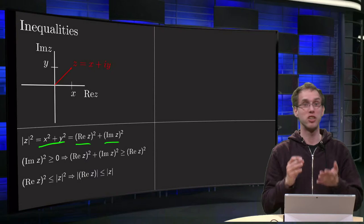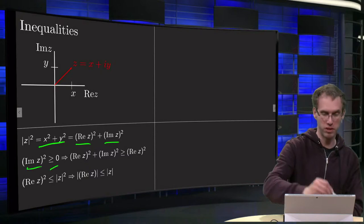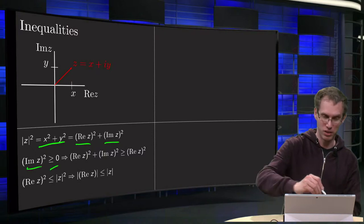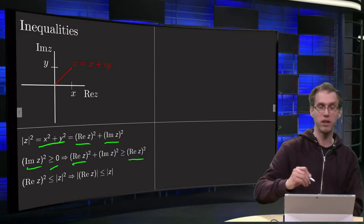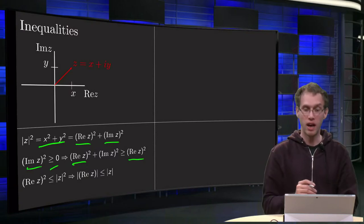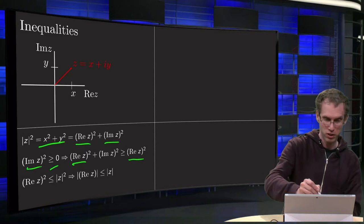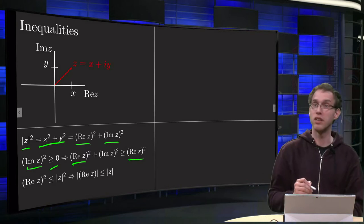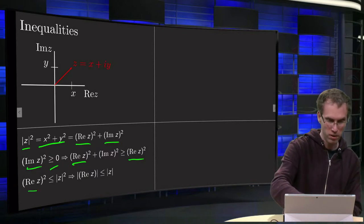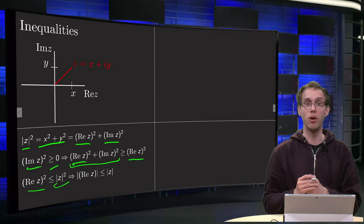The imaginary part of z is just some real number, so if you take the square of that real number you will always get something which is positive, greater or equal to zero. Adding the real part of z squared to both sides of this inequality, we get: real part of z squared plus imaginary part of z squared is bigger or equal to zero plus the real part of z squared. Since the left side equals the norm of z squared, we see that the real part of z squared is smaller or equal to the norm of z squared.